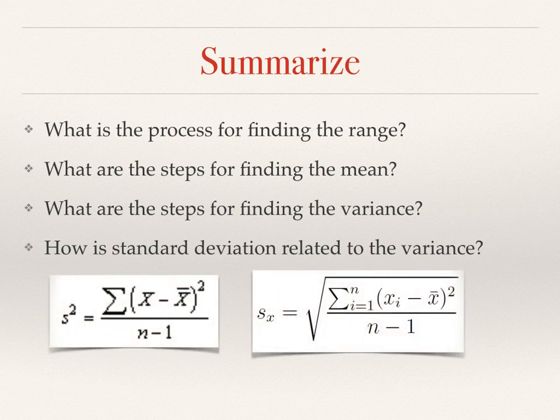Variance versus standard deviation. Variance is the formula on the left. It's an involved process. We have to take each individual data value, subtract off the mean, square it, add those all together, and finally divide by one fewer than the number of items of data in the set. And standard deviation, we take the square root of the variance.